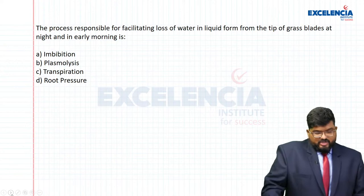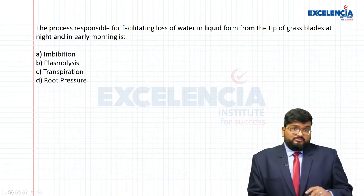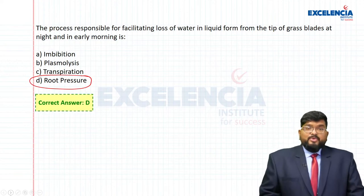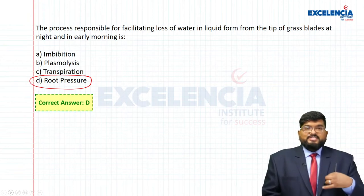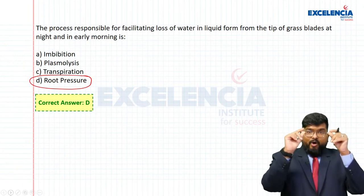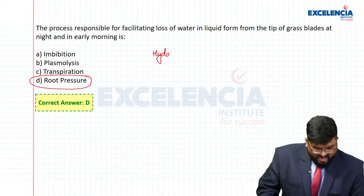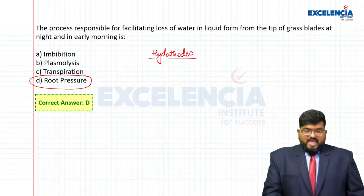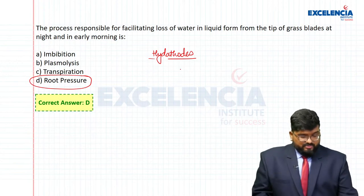The process responsible for loss of water in liquid form from the tip of grass blades at night and early morning: there is no transpiration occurring during the night, and water is continuously absorbed, so there is high root pressure. Because of this high root pressure, water droplets come out from leaf margins through structures called hydathodes. This process is known as guttation.